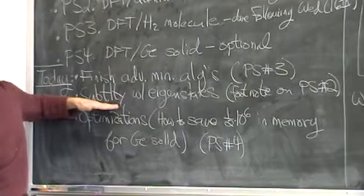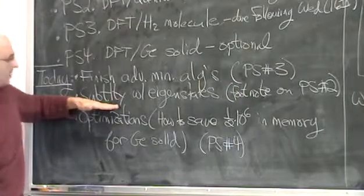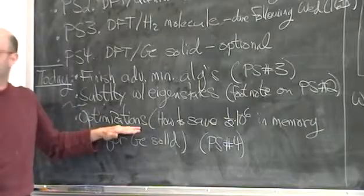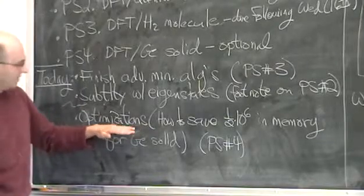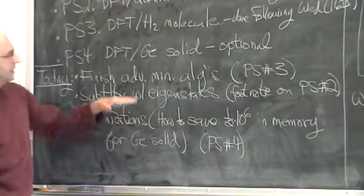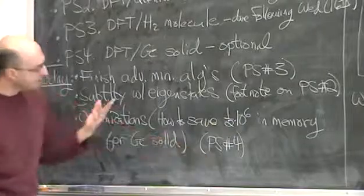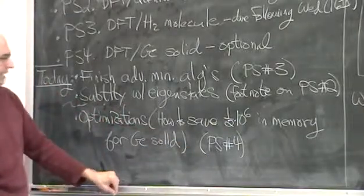But one can always optimize things further. And we have a little bit of time. So I'm going to describe some further optimizations one can make to really tweak up the code. And these actually are necessary to carry out the germanium solid calculation. So these would go on to that fourth assignment, if you're interested in carrying it out.